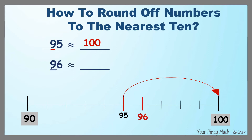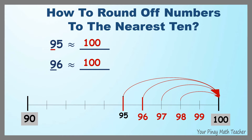How about 96? 96 is nearer to 100 than 90, so it is rounded off to 100. And so with 97, 98, and 99 — they are all rounded off to 100.